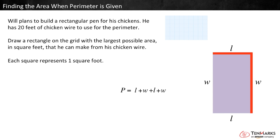If the whole perimeter is 20 feet, then half is 10 feet. So, the sum of L and W must be 10. What are some pairs of numbers that add to 10?